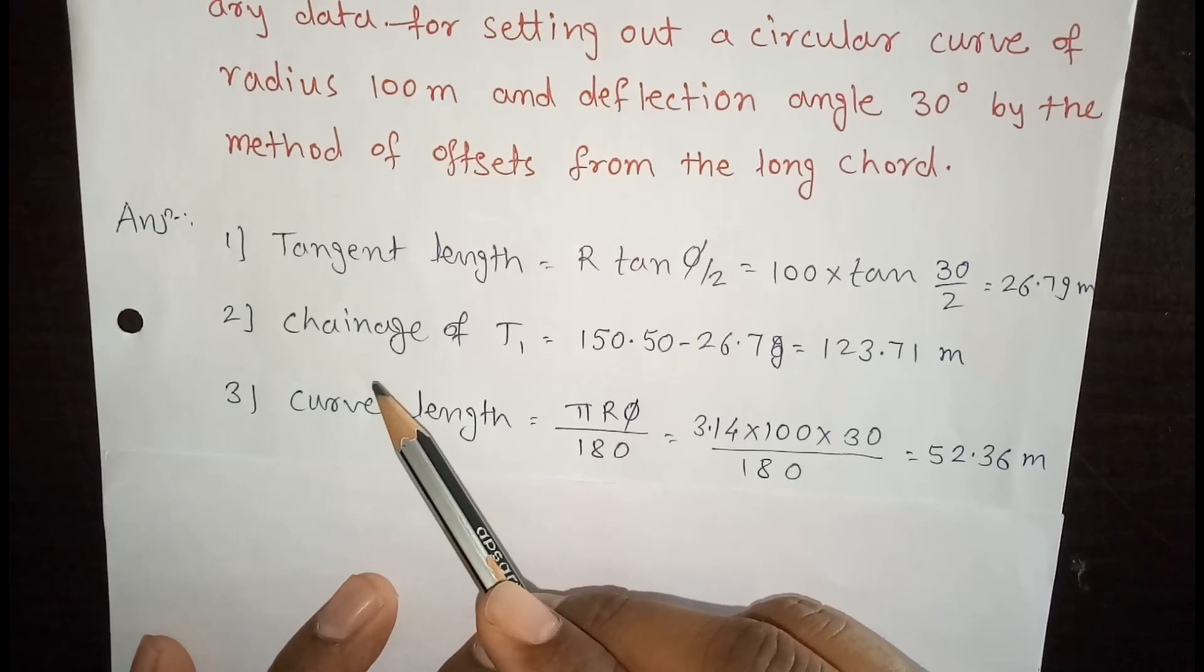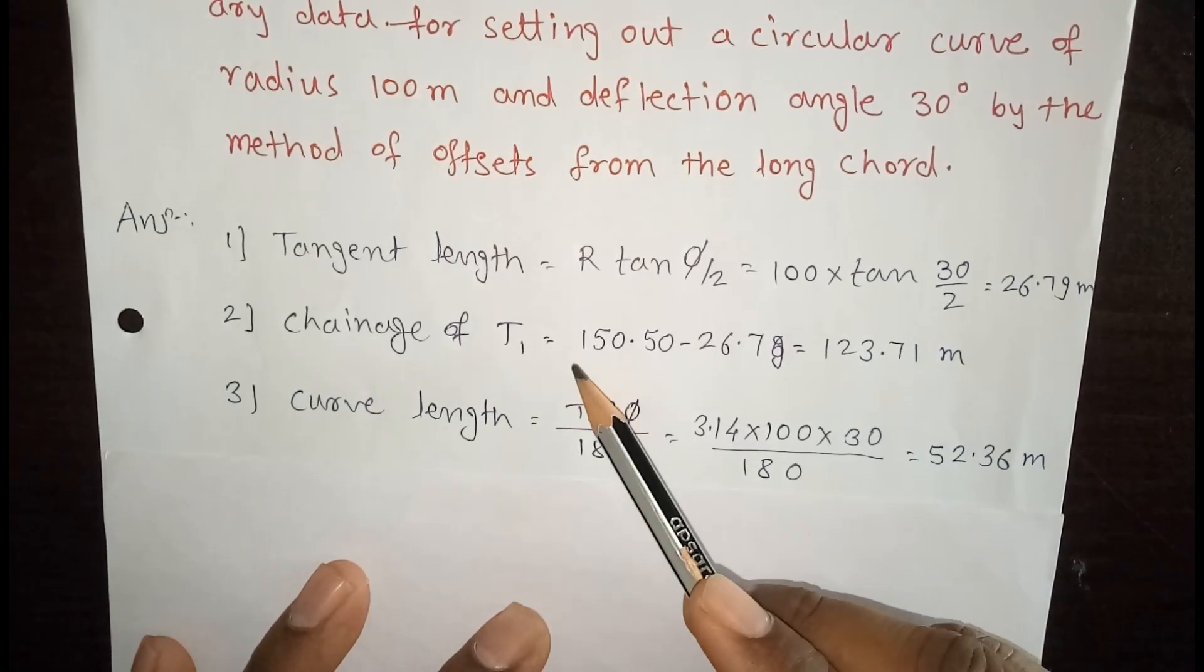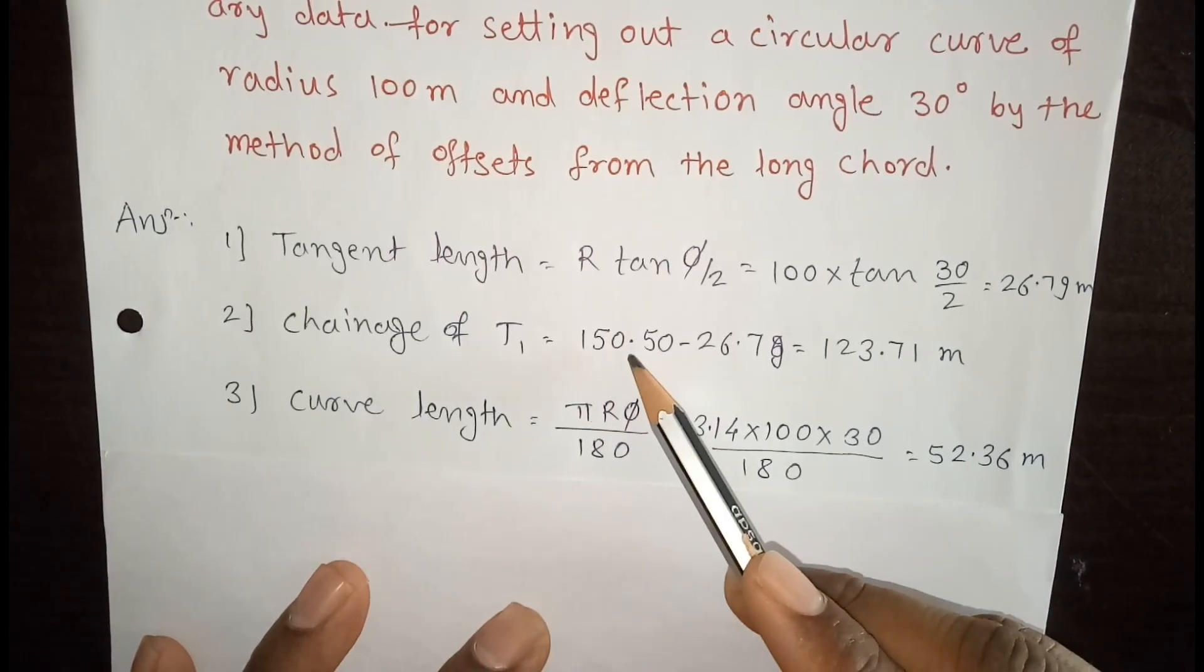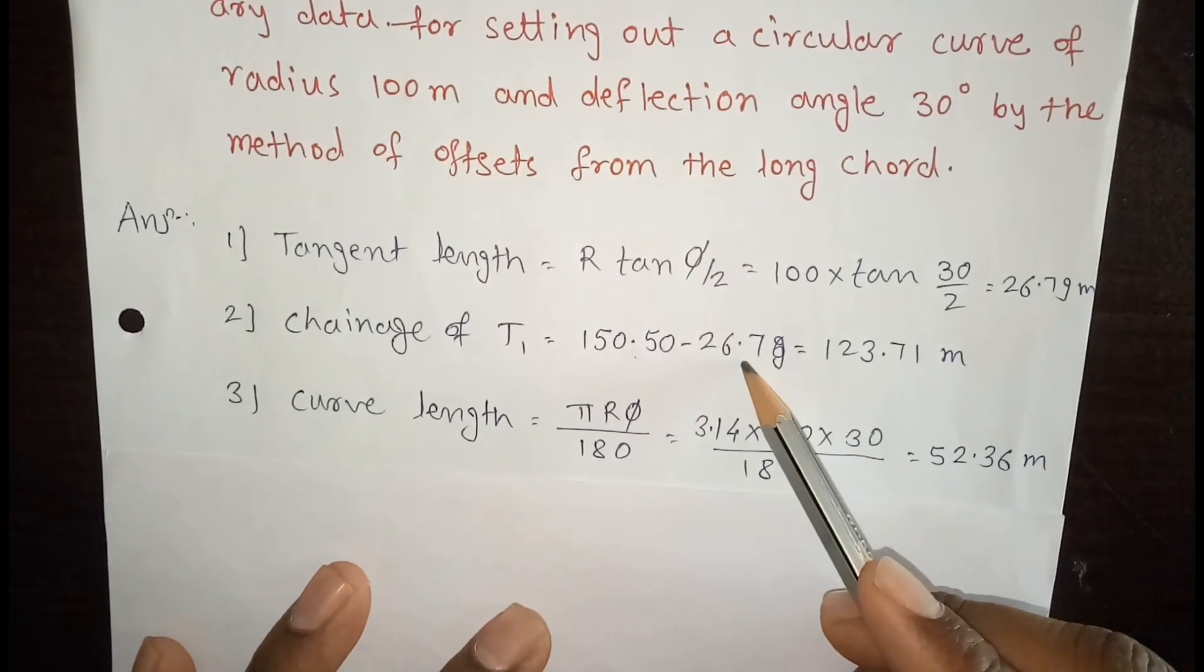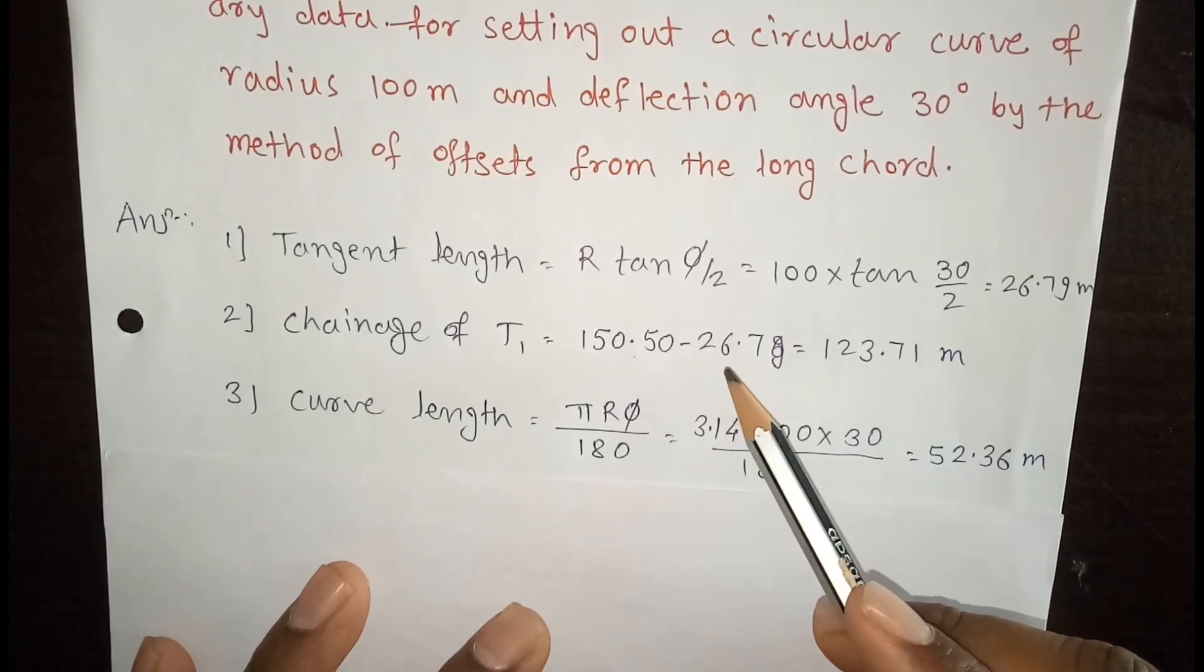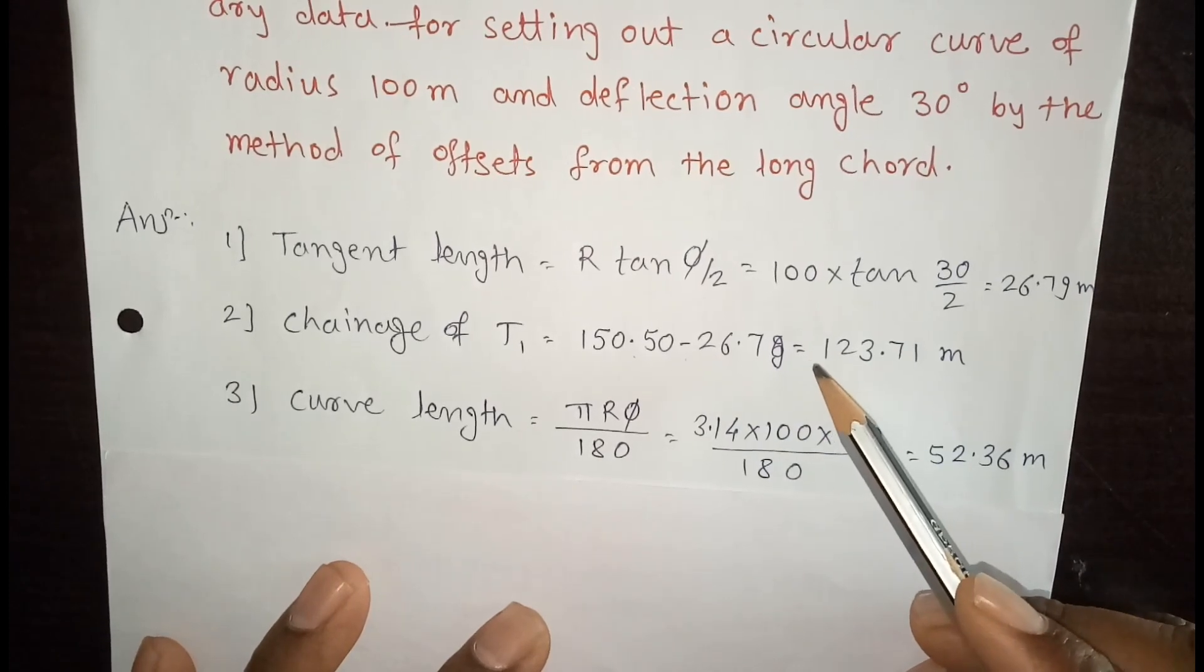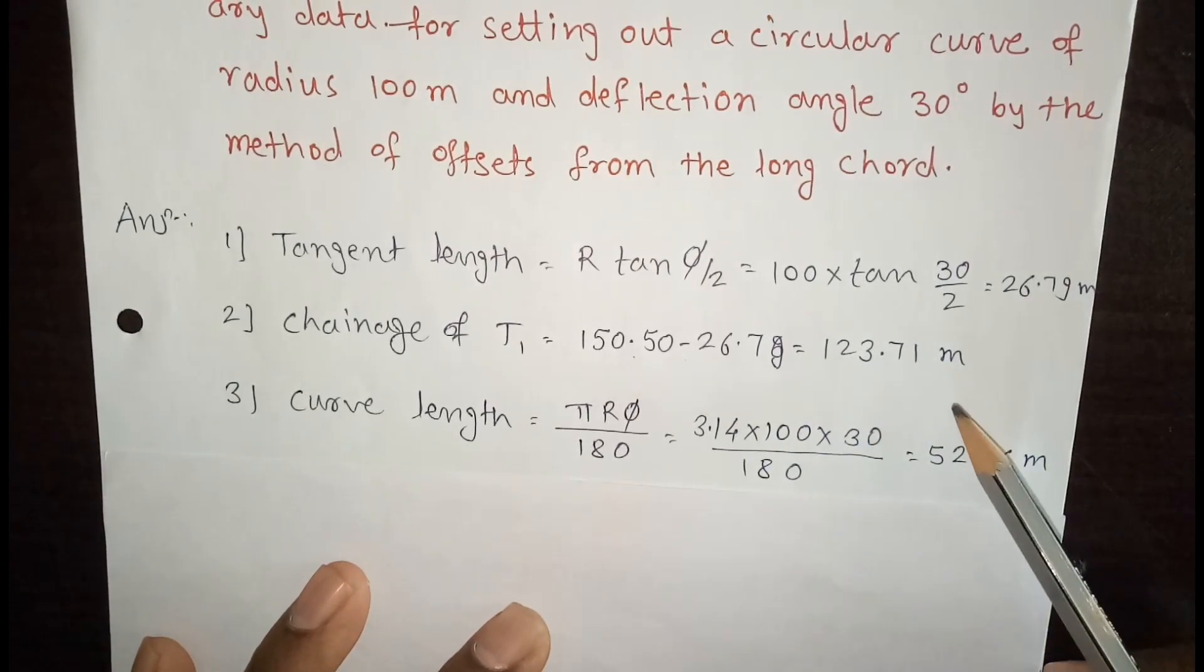Second step is chainage of T1. Chainage of T1 is equal to intersection chainage minus tangent length. So intersection chainage is 150.50 minus tangent length is 26.79. So chainage of T1 is 123.71 meter.